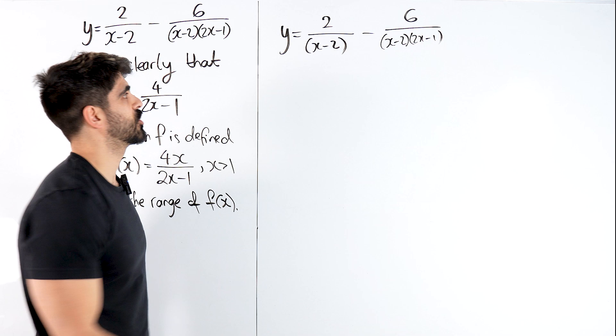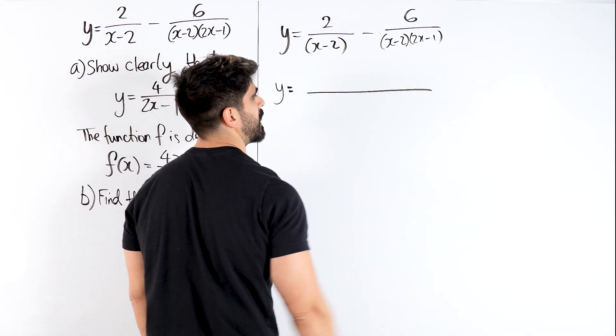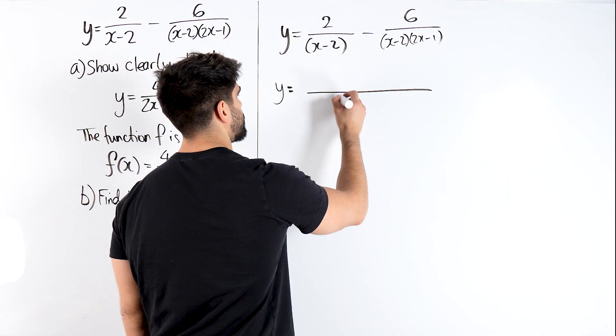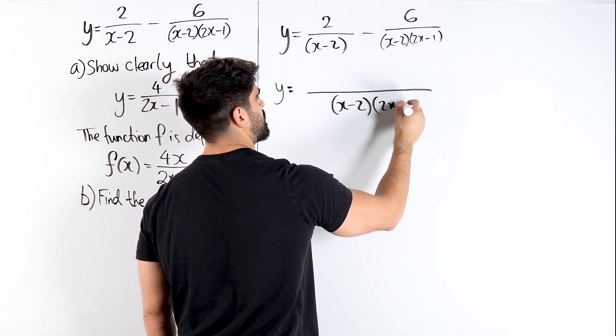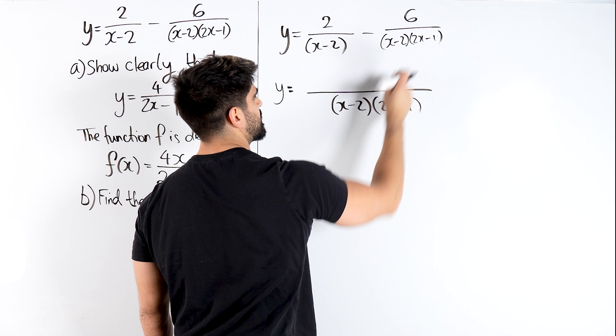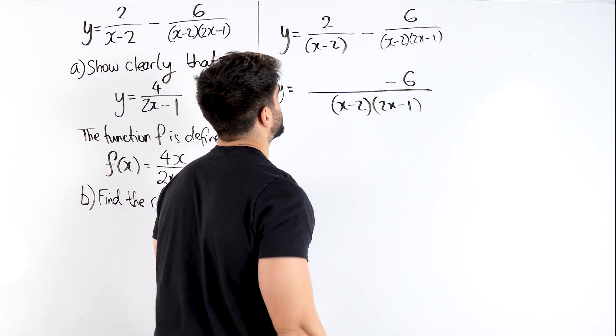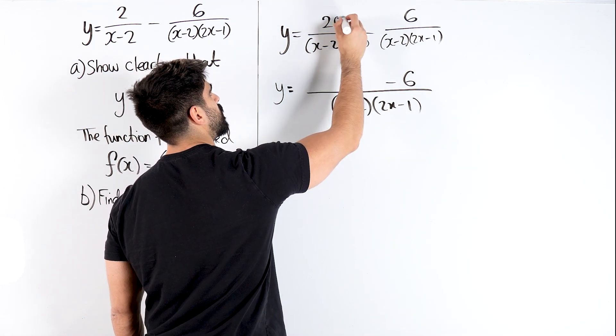Now we're going to choose a common denominator. The common denominator is taking one of every unique denominator, which is (x-2), which is shared. But then we also need to take into account the (2x-1). That means this minus 6 can just stay. However, this one is missing the (2x-1), so we have to times top and bottom by (2x-1).